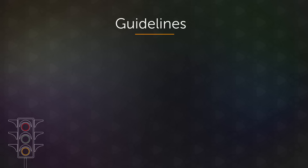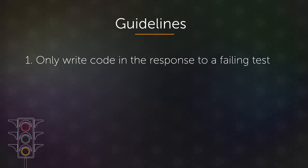There are two guidelines to keep in mind while you're writing tests. There's nothing technical that is going to force you to do this — this is a personal discipline and a process you can follow to ensure very high quality tests and code. The first guideline is: only write code in response to a failing test. If you only write code in response to a failing test, you'll be sure that you have very good coverage on the code that you write.